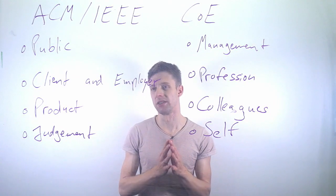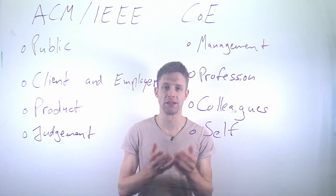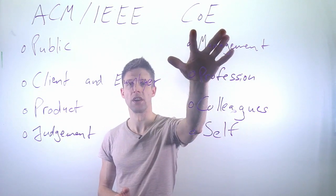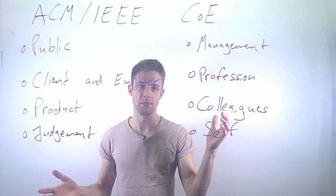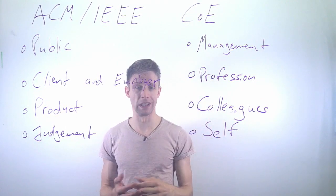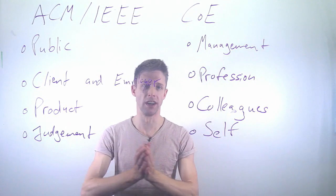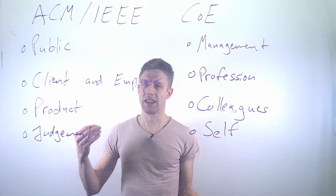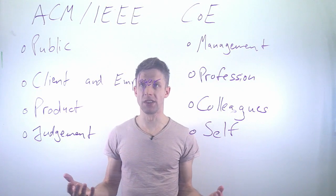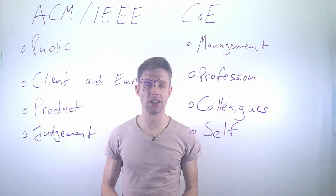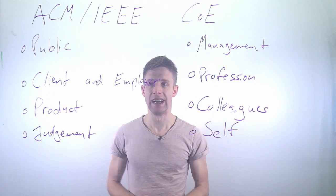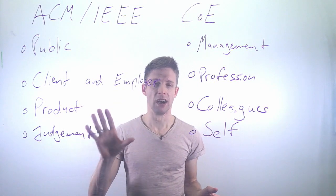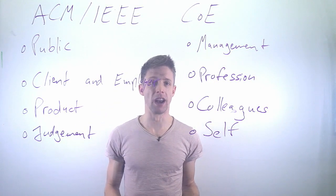As a software engineer you need to take care about a lot of different things. What most other disciplines do in engineering, but also in the humanities and in medicine, is that they have so-called codes of ethics — documents that state what your moral obligations are as a doctor or a mechanical engineer. You subscribe to them and, in many countries, if you are in a professional organization or a registered engineer, you are actually obliged to follow that and may be liable if you act against it.